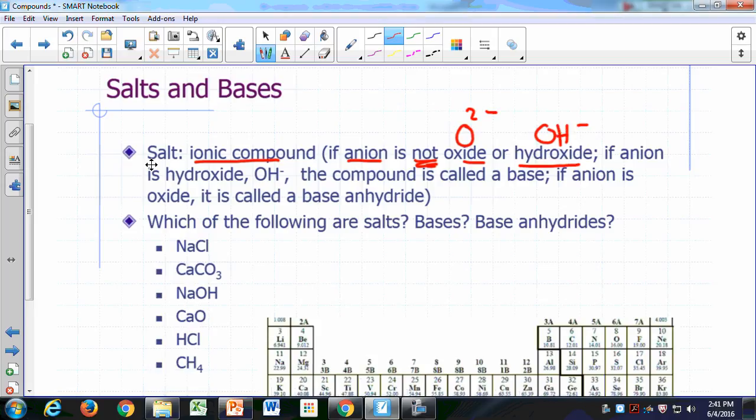So if the anion happens to be hydroxide, you call that a base, and if the anion happens to be oxide, you call that a base anhydride.